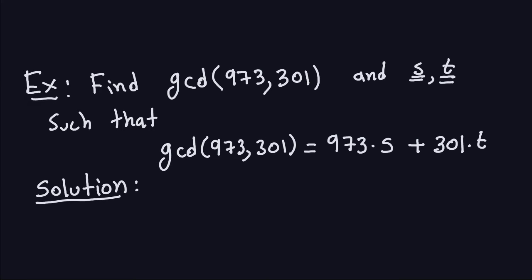Hello and welcome again. This is a second example of finding the GCD between two numbers and also finding how we can express the GCD as a combination of two numbers. In this case we have 973 and 301.